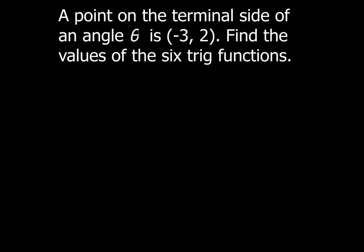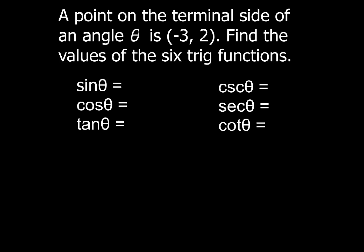Now a lot of times you'll see a problem that looks like this. The point on the terminal side of an angle theta is (-3, 2). Find the values of the six trig functions and what this wants you to do basically is just find sine, cosine, tangent, and cosecant, secant, and cotangent of that angle. So those are the six trig functions that we're going to go ahead and set out to find for the point (-3, 2).